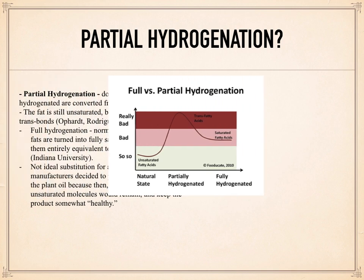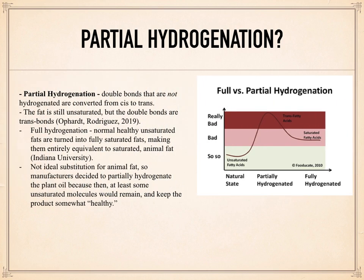In the partial hydrogenation process, the double bonds that are not hydrogenated are converted from cis to trans. The fat is still unsaturated, but the double bonds are trans-bonds. Full hydrogenation takes normal, healthy, unsaturated fats and changes them into fully saturated fats, thus making them entirely equivalent to saturated animal fat. This would not be a good or healthy substitute for animal fat, so the solution manufacturers came up with was to partially hydrogenate the plant oil, because then at least some of the unsaturated molecules would remain and keep the product somewhat healthy. Partially hydrogenated oils can be found in shortening and soft margarine, and they are semi-soft.